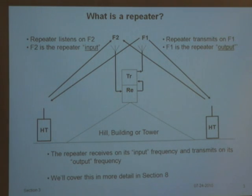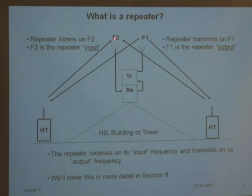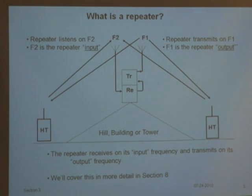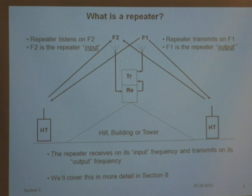The repeater listens on one frequency — that's the receiver's input, or its ears — and transmits on a different frequency, which is called the repeater's output. That's how we get over the top of hills. Repeaters should be on top of a tower, hill, or building. On Palos Verdes, there are dozens and dozens of repeaters, and some have emergency power so people across LA County can communicate during emergencies.